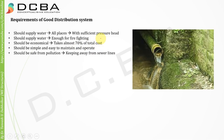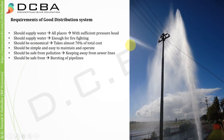The system should be safe from pollution — keeping away from sewer lines is a major requirement. If the sewer line is very close by and cracks or leakage develop between the sewer lines and the main distribution line, it may cause pollution in the water. It should also be safe from bursting of pipelines, using pipes rated for the operating pressure.